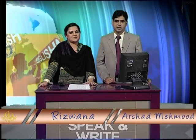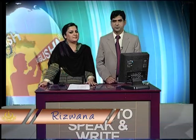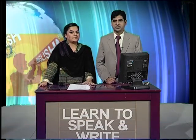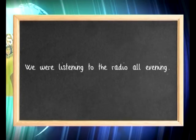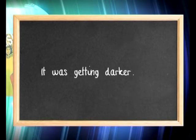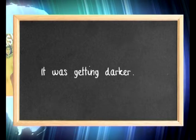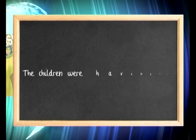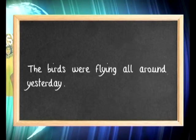The form is quite simple. Now let's move to function, which is more important. We use the past continuous tense to talk about an action going on at some time in the past. The time of the action may or may not be indicated, because it may not be important. For example: 'We were listening to the radio all evening.' You can add 'yesterday' if you want to give the exact time. 'It was getting darker.' 'The birds were flying all around yesterday.'